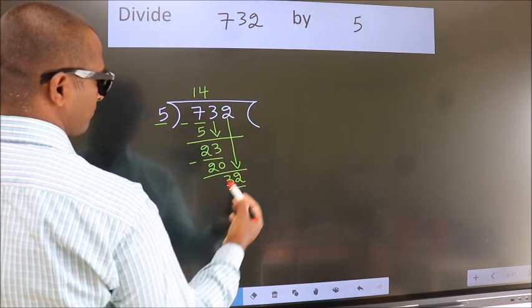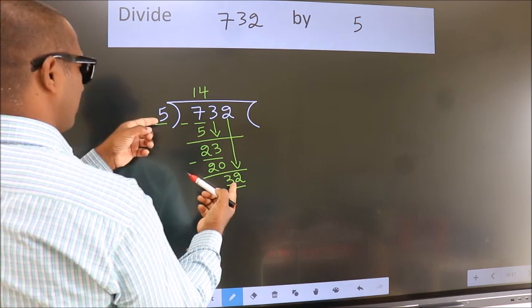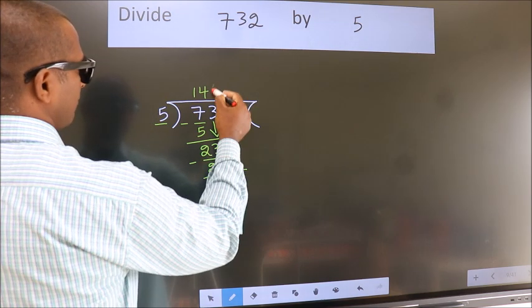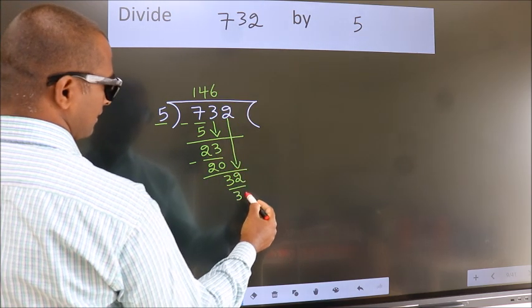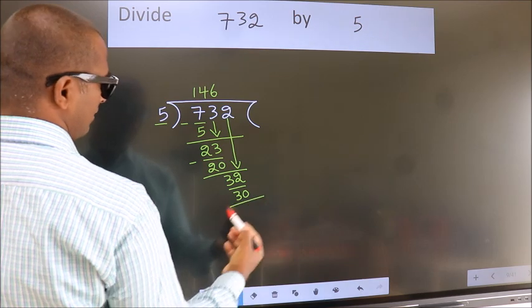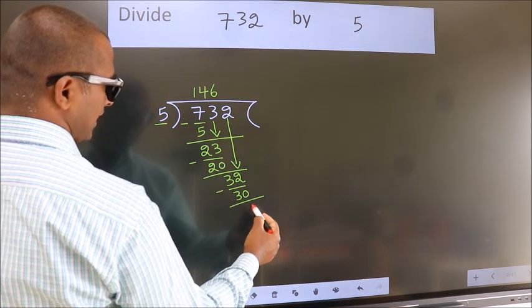A number close to 32 in the 5 table is 5 times 6 is 30. Now we subtract. We get 1.